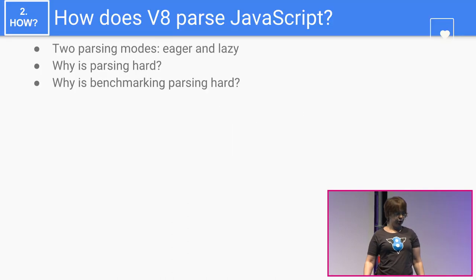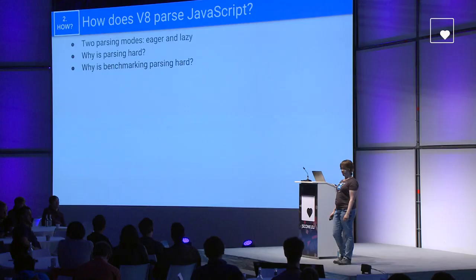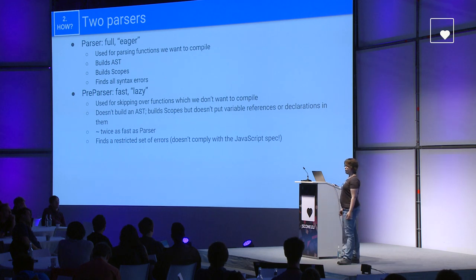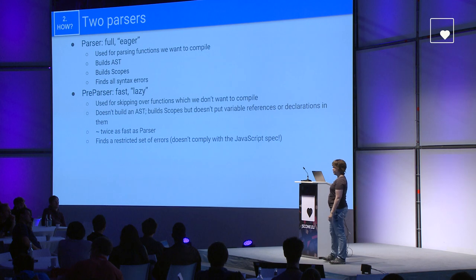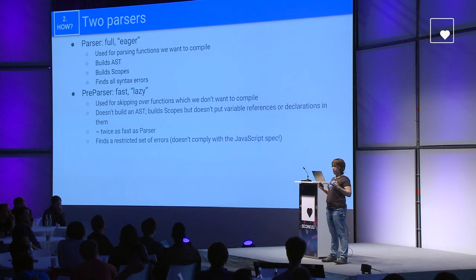So how does V8 parse JavaScript? I'm going to talk about our two parsing modes — eager and lazy — and why parsing is hard and why benchmarking it is hard. We actually don't have one parser; we have two parsers, called parser and preparser for historical reasons. Parser is the full, eager one, used for parsing functions we want to compile right now. It builds the AST and scopes, and it finds all syntax errors in the code.